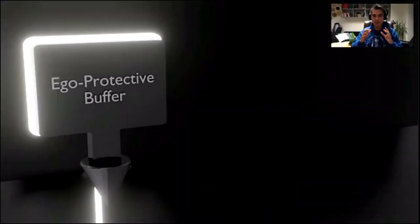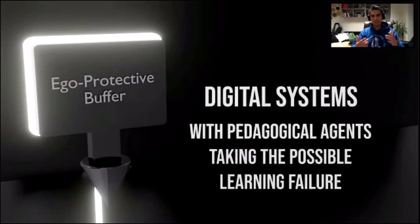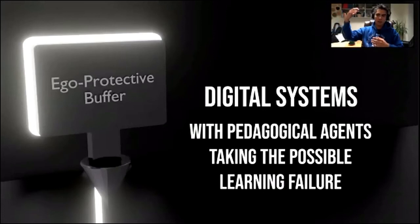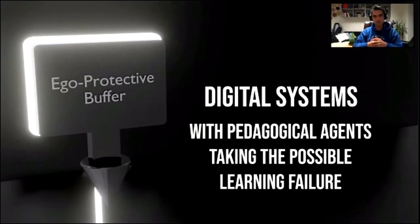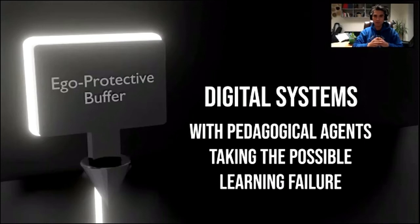The second mechanism of the protégé effect is the ego protective buffer. This is the pain point of fully analog settings. When you have digital systems, the pedagogical agent is the one taking the failure — the student teaches the agent, and the agent has to take the test. If that doesn't happen, since it's not actually the student who fails the exam, then the ego is protected. That is what they refer to as the ego protective buffer. But when you do a fully analog setting with real students, there is a downside: the tutor and the tutee will not share the same failure treatment.